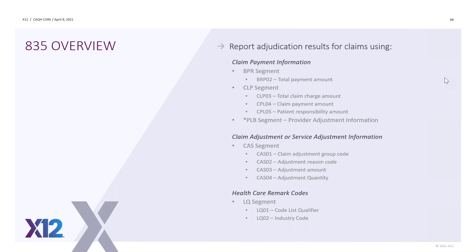The final piece is remark codes. At the service level they're reported in the LQ segment. At the claim level, you would report those remark codes in the MIA and MLA segments. Depending on where you're reporting adjustments is where you report the associated remark codes. There are remark codes that are not directly associated to an adjustment reason — they're called alerts. In the remark code list, their description begins with the word 'alert.' They are extra information that a payer deems critical to the message to the provider, and they can be reported either at the claim or the service level.